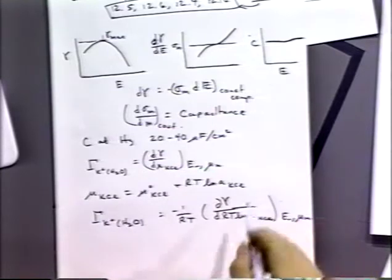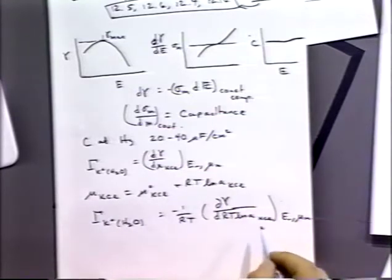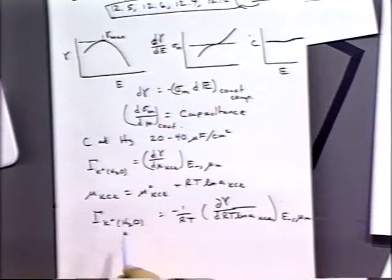By looking at the change in surface tension with change in activity of KCl, we can get the surface excess amount of potassium ion.